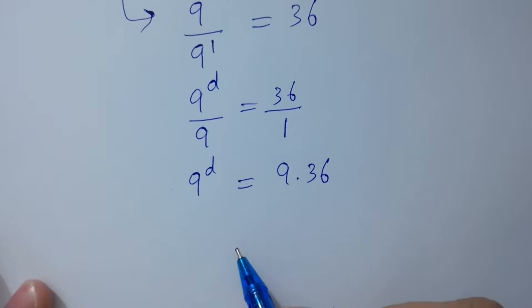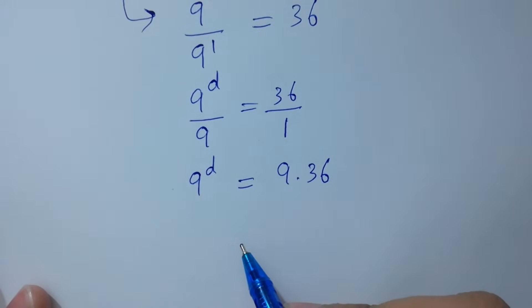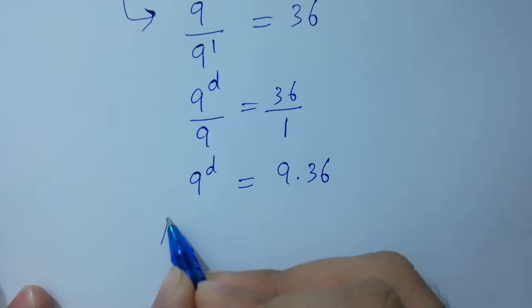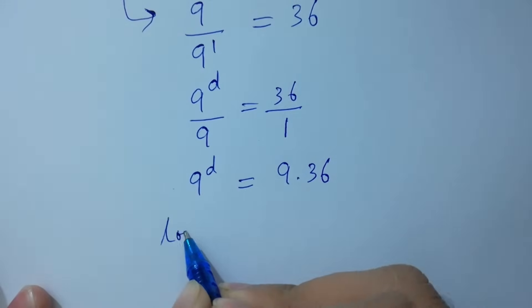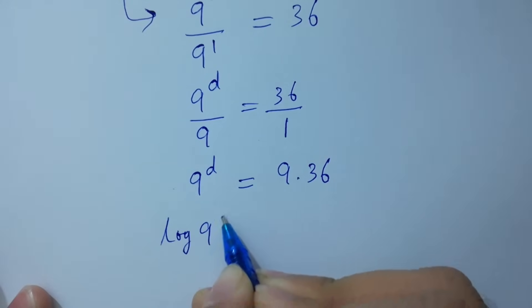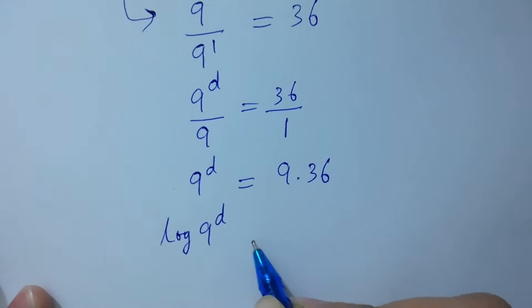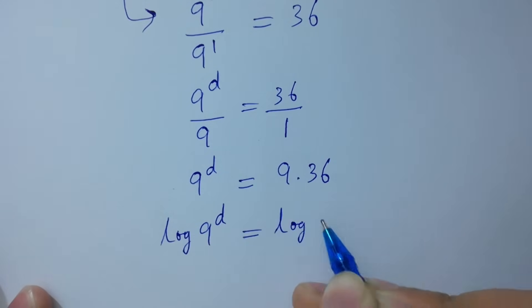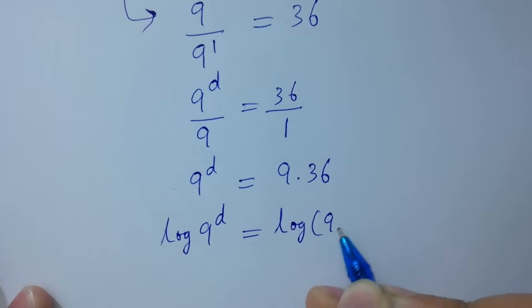To solve this, take log on both sides. So log 9 to the power d equals log of 9 times 36.